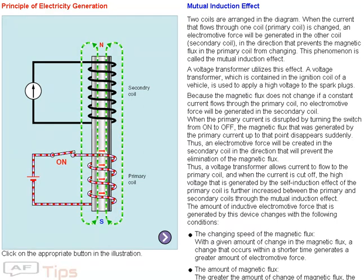Thus, a voltage transformer allows current to flow to the primary coil, and when the current is cut off, the high voltage generated by the self-induction effect of the primary coil is further increased between the primary and secondary coils through the mutual induction effect. The amount of inductive electromotive force that is generated changes with the following conditions. Regarding the changing speed of the magnetic flux: with a given amount of change in the magnetic flux, a change that occurs within a shorter time generates a greater amount of electromotive force.